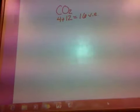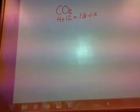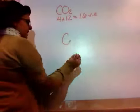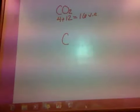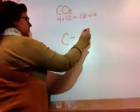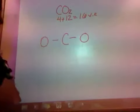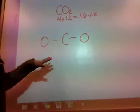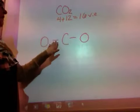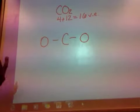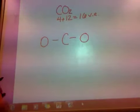Now I'm going to look at which atom — carbon or oxygen — is going to be the central atom. Oxygen is more electronegative, and I want the least electronegative of the two, so carbon has to be in the middle. Let's draw our skeleton structural formula: carbon, oxygen, oxygen. We need 16 valence electrons total. Right now we only have 4, so I need to get 12 more electrons around these atoms.